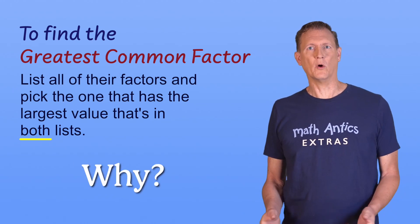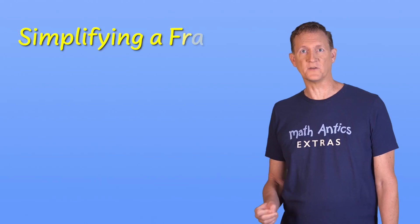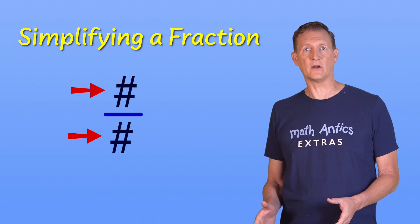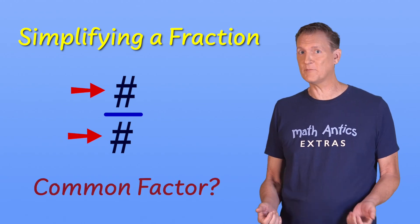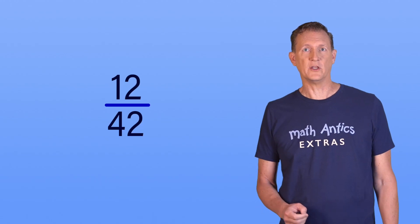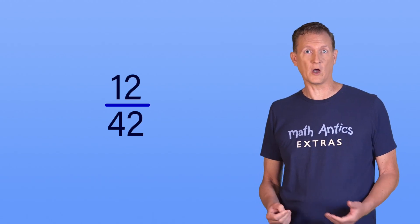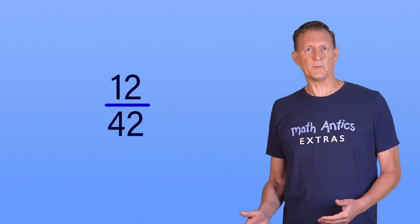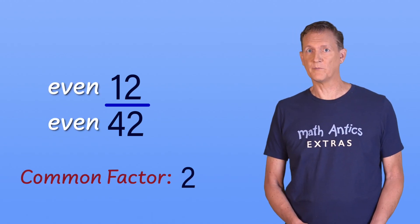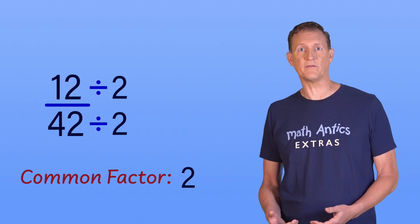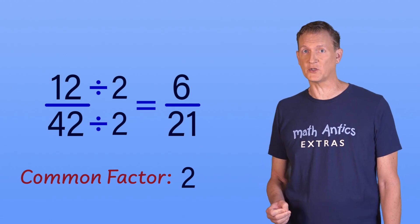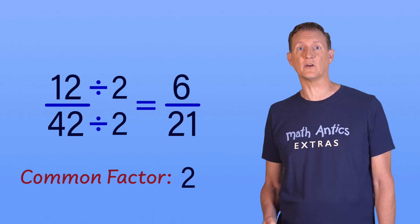But why would you ever want to do that anyway? Well, one very common use for the greatest common factor is simplifying a fraction. A fraction is made up of two numbers — if the numerator and denominator have a common factor, the fraction is not as simple as it could be because it contains factors that could be cancelled. For example, if you have the fraction 12 over 42, you know it can be simplified because 12 and 42 have common factors. Most people might notice they're both even numbers, meaning they share a common factor of 2, so you could divide both the top and bottom by 2 to get 6 over 21. But that's still not fully simplified, because 6 and 21 still share a common factor of 3.